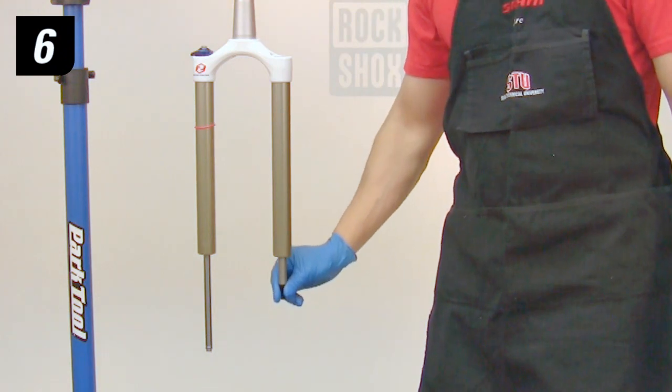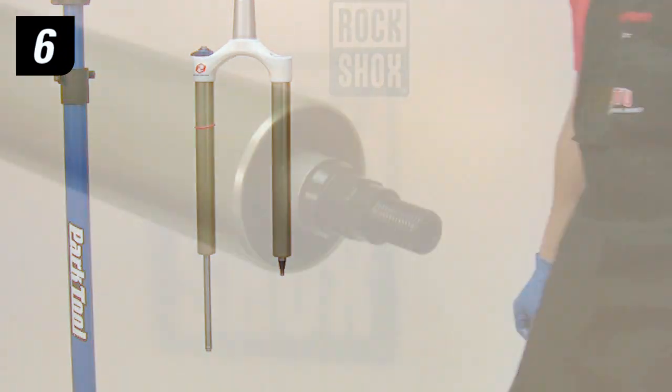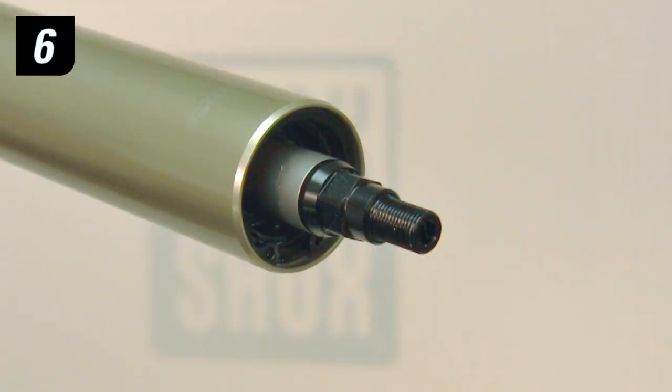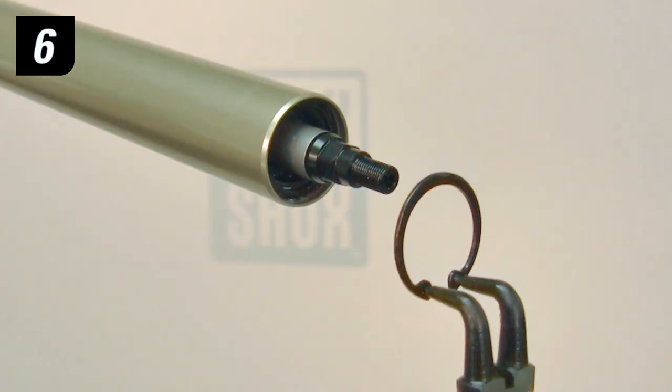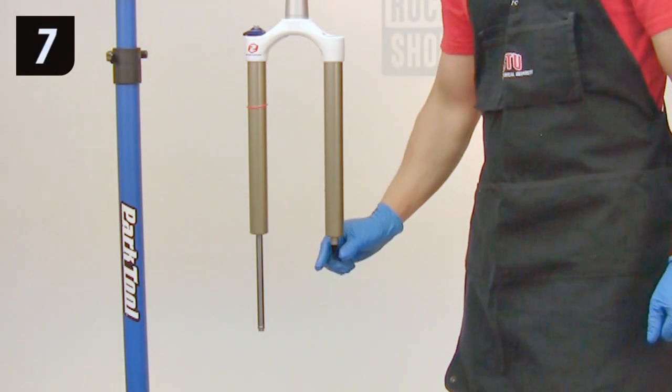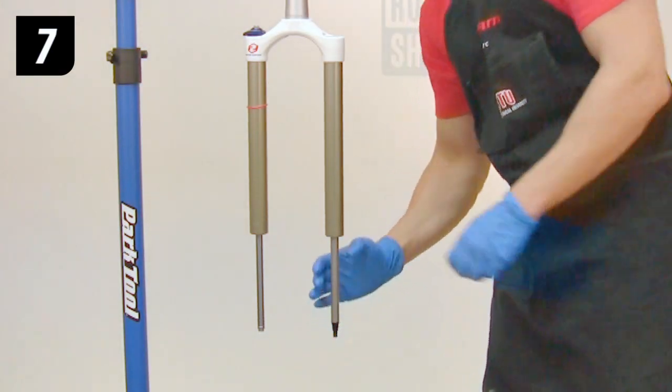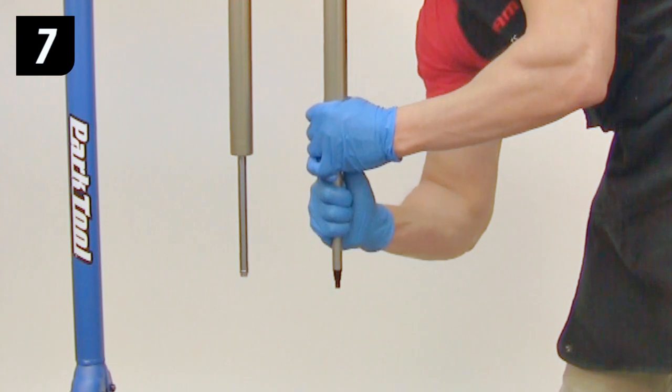Step 6. Push the air shaft into the upper tube. Leave just enough of the shaft exposed so that you can grab onto it. Remove the snap ring located at the bottom of the upper tube. Step 7. Pull out on the air shaft and remove the air piston assembly from the fork.